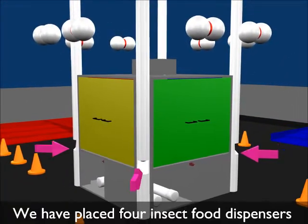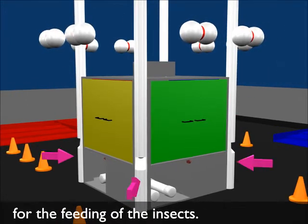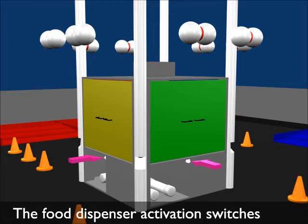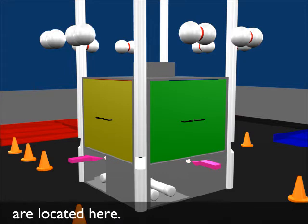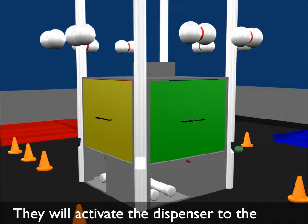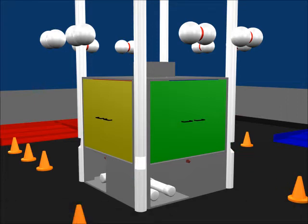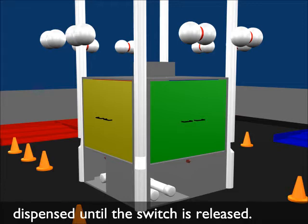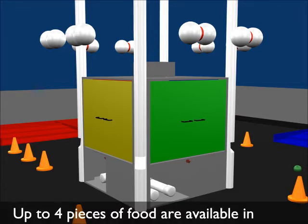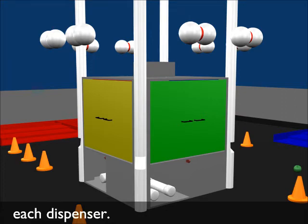Food dispensers detailed information: We have placed four insect food dispensers for the feeding of the insects. The food dispenser activation switches are located here. They will activate the dispenser to the left of the switch. When the switch is pressed, food will be dispensed until the switch is released. Up to four pieces of food are available in each dispenser.